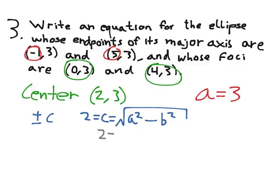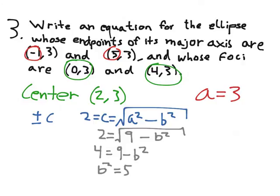So now here I have 2 is equal to the square root. We already know what a is, it's 3. So 3 squared is 9, minus b squared. I can square both sides. And finally, I can move some things around, and I get that b squared is equal to 5.